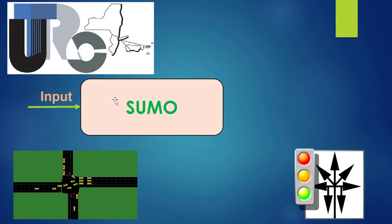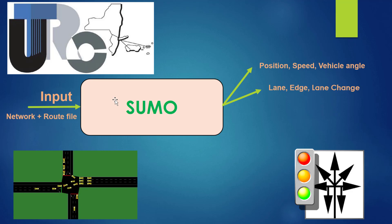In SUMO we have input that's usually the network plus the route file, and as output we have many options that can consist of the position of the vehicle, the speed, the vehicle angle. We can also have the lane ID, the edges, and the lane change — to know if the vehicle changed lane during the simulation and if so, for what reason.